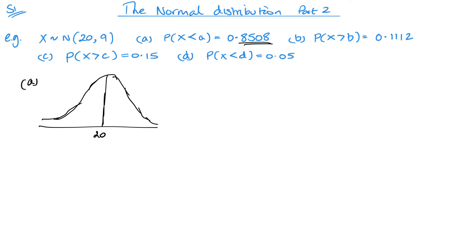We want to look at P(X < a) = 0.85. That's bigger than a half, so for the area to the left of a to be bigger than a half, a has to be to the right of the mean 20. If a was on the left of 20, the area would be less than half. That's how I determine which side it goes on — the area to the left of a has to be bigger than a half, so a is on the right-hand side of the graph. Now I know it's there, I can look straight up in my tables.